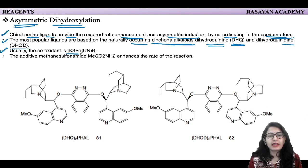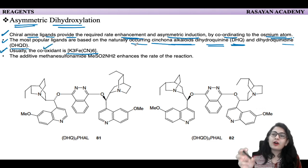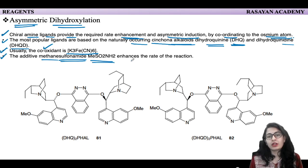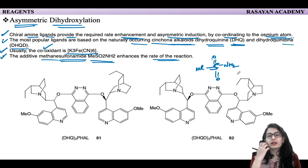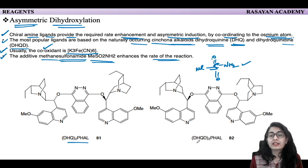We'll also see why potassium ferricyanide K₃Fe(CN)₆ is used as a co-oxidant along with our osmium reagent. We also have an additive known as methanesulfonamide, MeSO₂NH₂, that enhances the rate of the reaction. It's simply an amide where you replace the carbon with sulfur and add one more double bond oxygen.